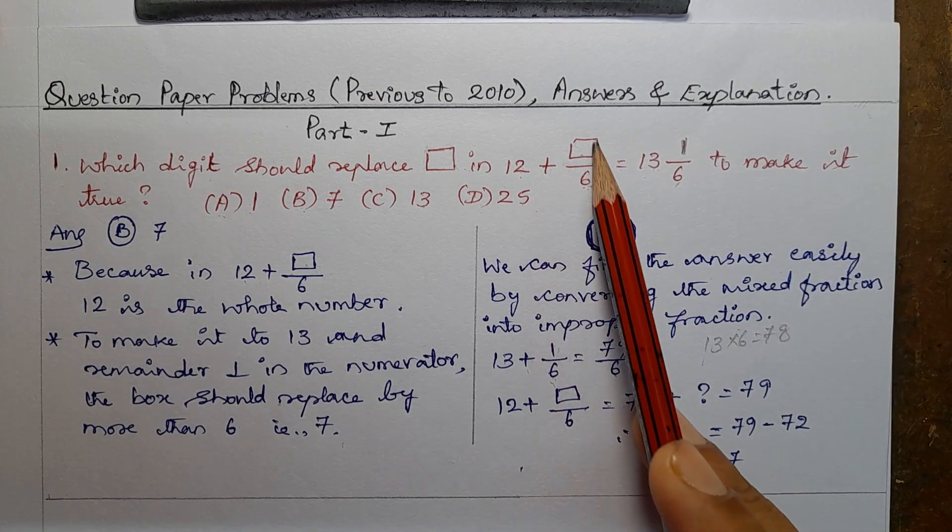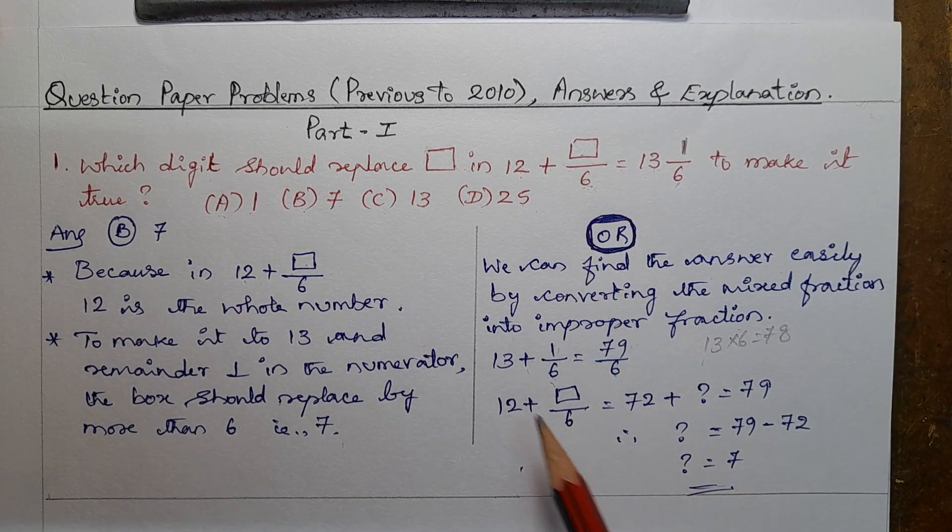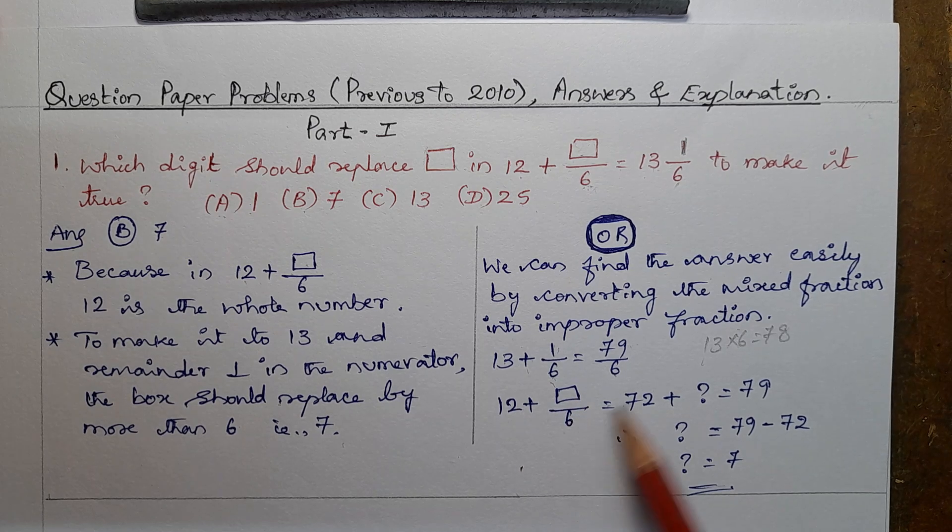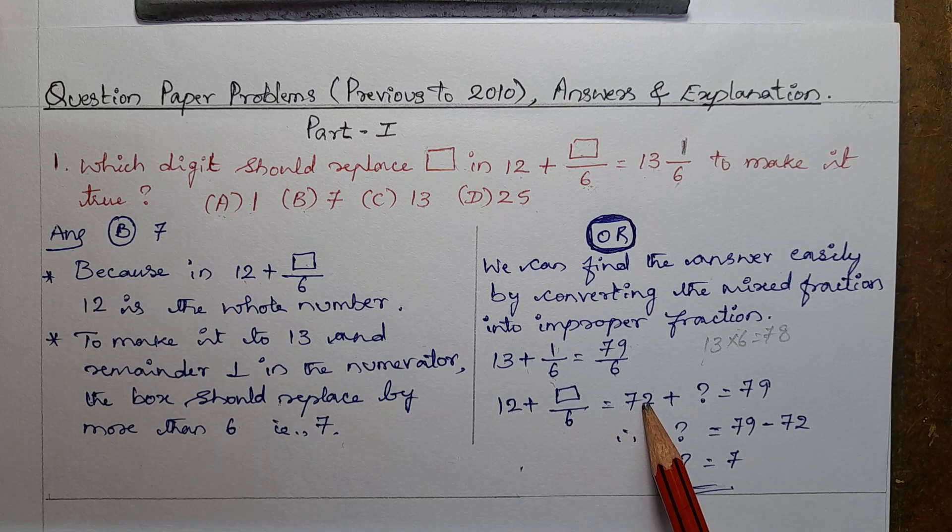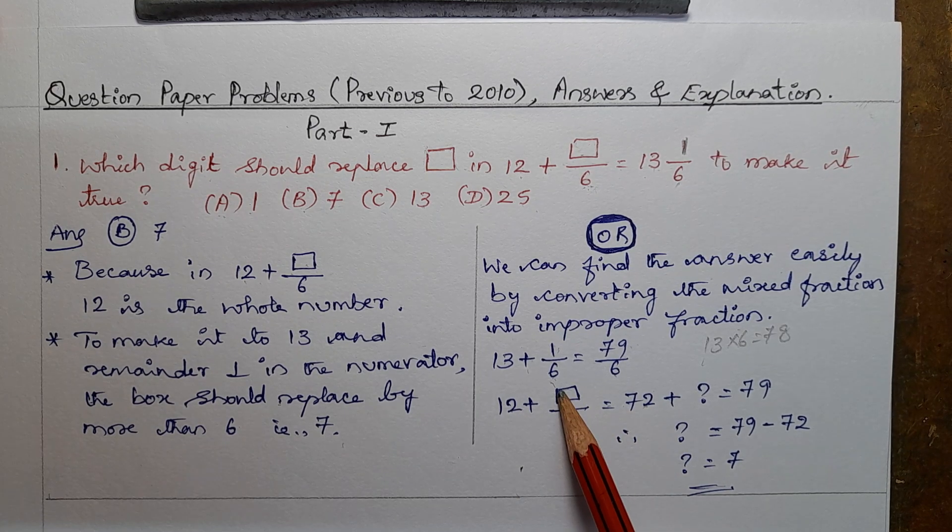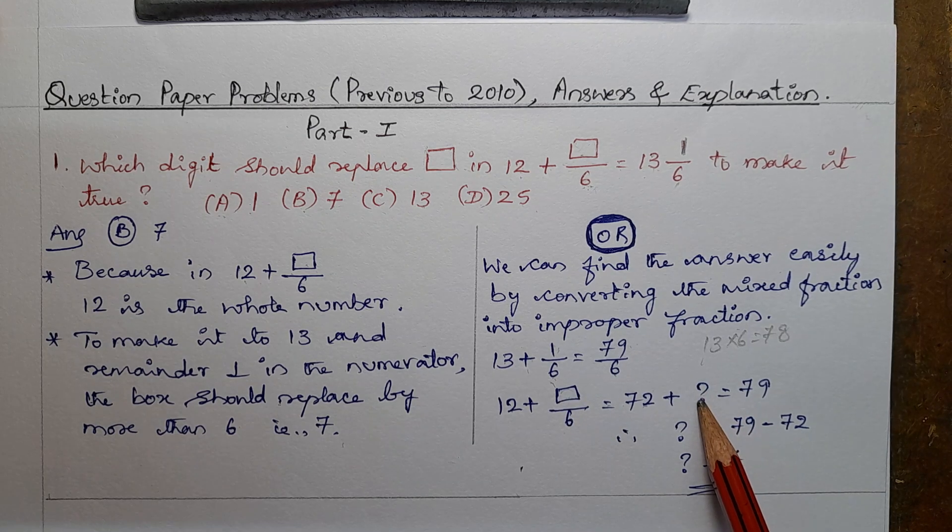So 12 plus, this is the box, this box divided by 6. So 12 times 6 is 72. This box is the numerator. The numerator is the same, equal to the numerator.